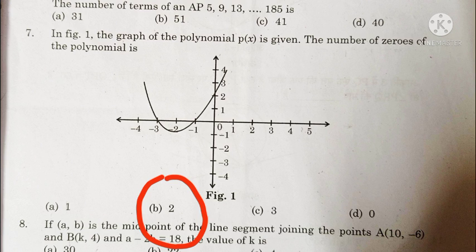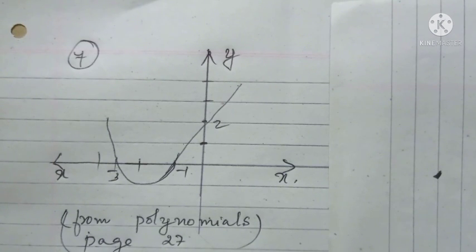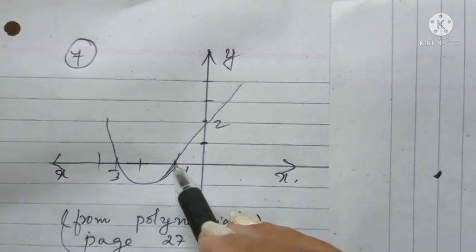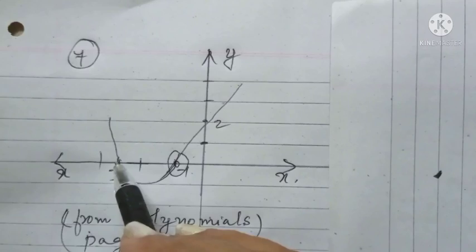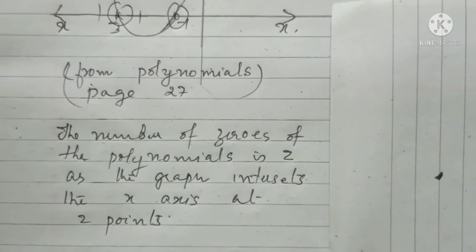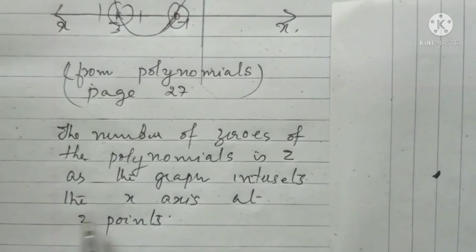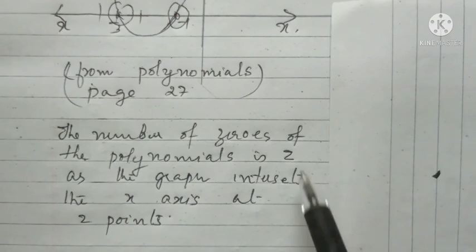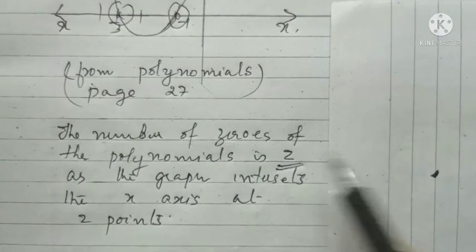In the given graph, the polynomial P(x) is given. The number of zeros of the polynomial is done. In this question, we can see the graph is touching 2 points in the x-axis at this point and this point. The zeros of the polynomial is 2. As the graph intersects the x-axis at 2 points, therefore, the answer is 2.